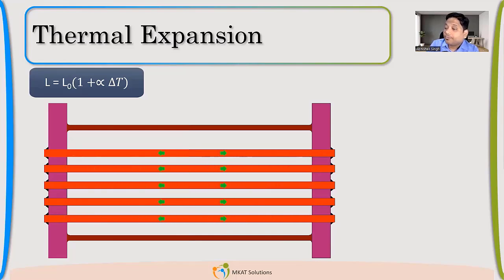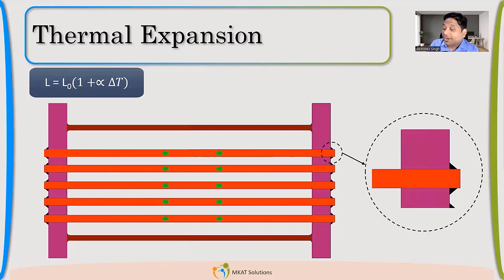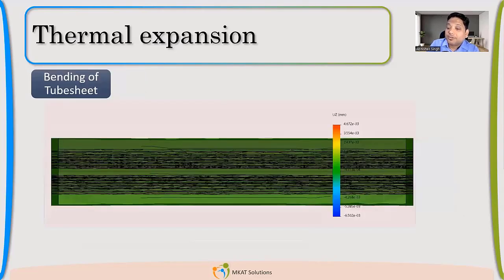So the tubes will try to move, it will try to push that tube sheet, because shell is trying to hold your tube sheet and tubes are trying to push it. So what will happen in that case, there will be lots of stress coming on the joints, right? Because that is the joint which is holding the tube sheet and tube together. So if this joint is very strong, in that case, your tube sheet will bend. And then bending may become a problem. Compressive stresses in the tubes, that may be a problem. So lots of problems.